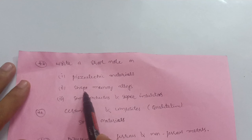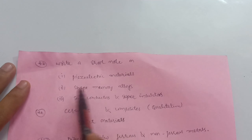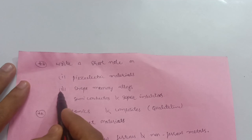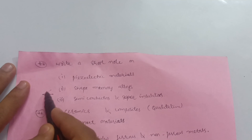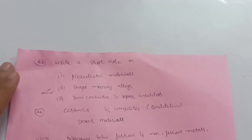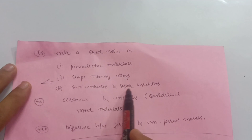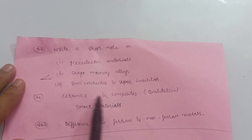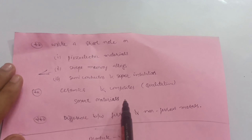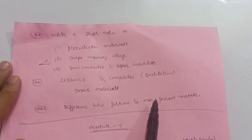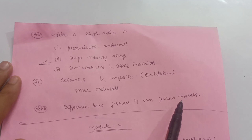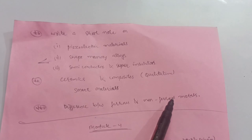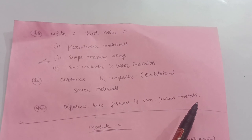Next, explain non-ferrous metals with their applications. Write a short note on smart materials — most important — and shape memory alloys, which may be a separate 10-mark question. You should discuss semiconductors, super insulators, ceramics, composites, and smart materials, as well as the difference between ferrous and non-ferrous metals. This much is enough for Module 2.